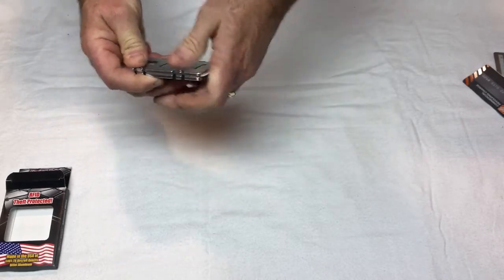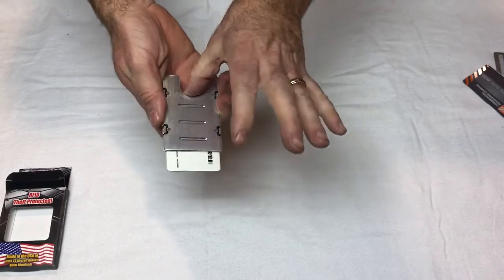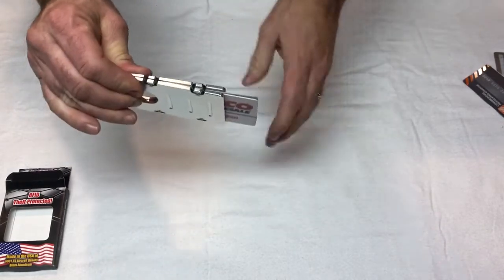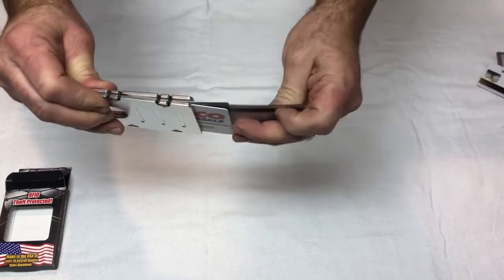Once you get a couple cards in there, you can slide them up with the thumb hole here. You just slide it up with your thumb, pull them out, and pinch it and you can keep adding more cards.